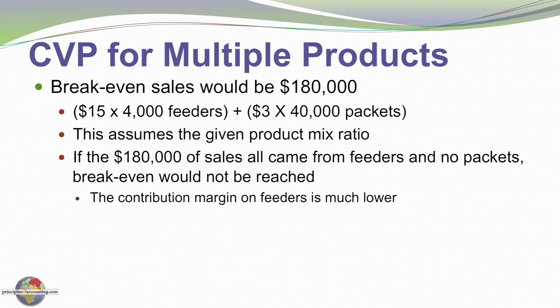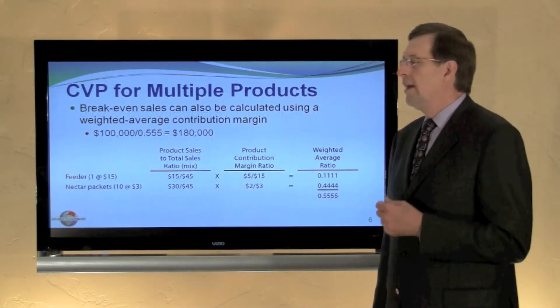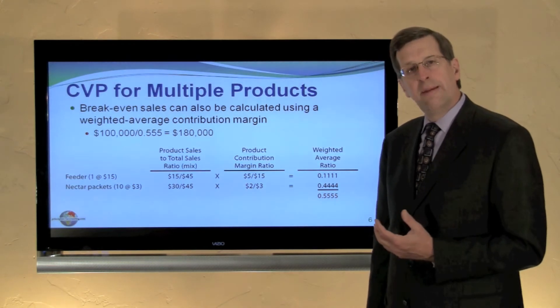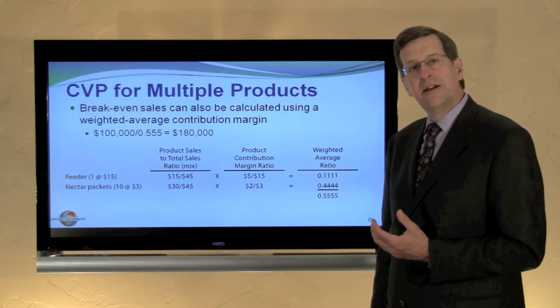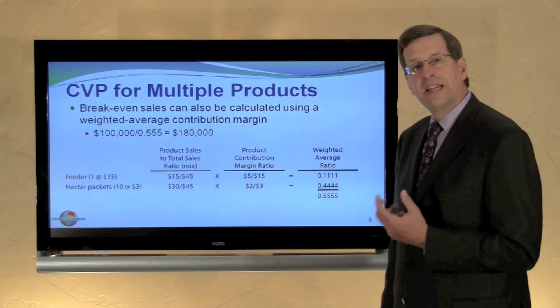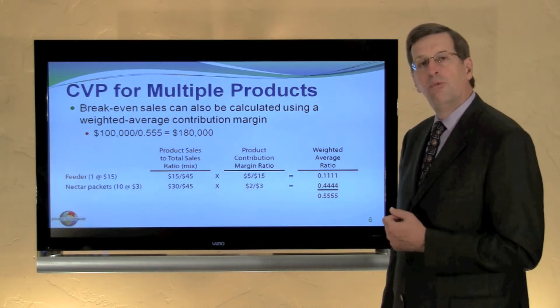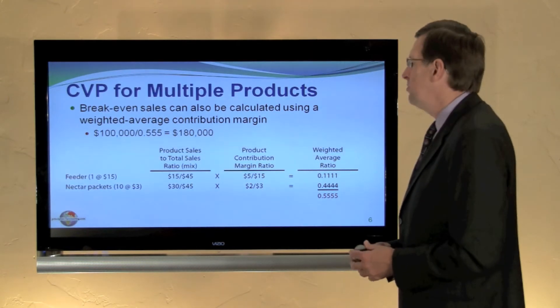If the $180,000 of sales all came from feeders with no nectar packets, for example, break-even would not be reached. Alternatively, we might reach break-even sooner if we sell a higher proportion of the higher-margin nectar packets. An alternative way to calculate break-even sales is to divide the fixed cost by the weighted average contribution margin ratio.